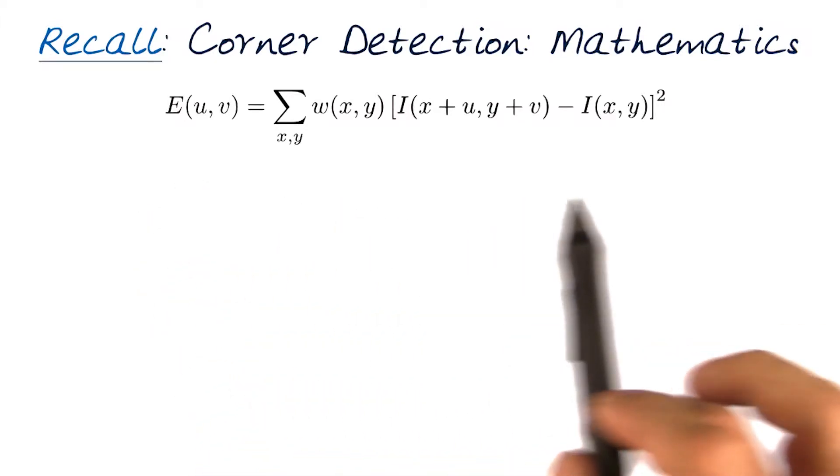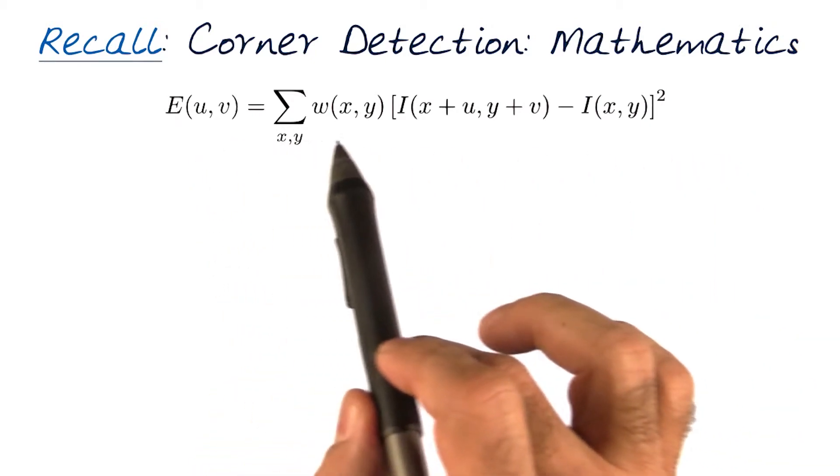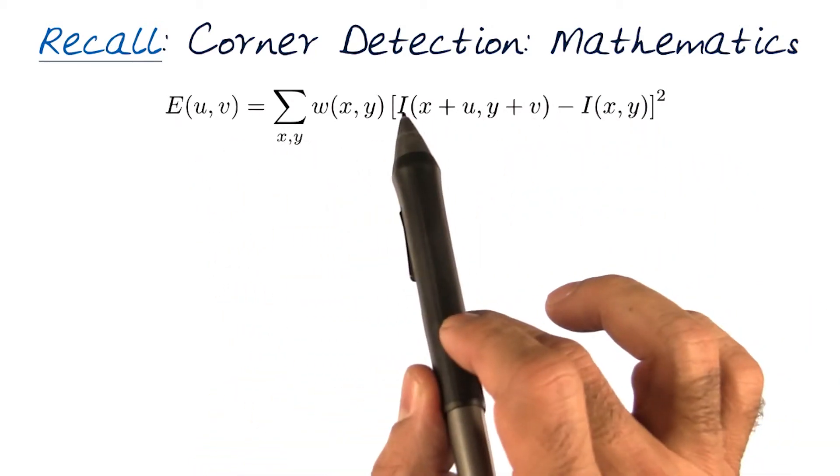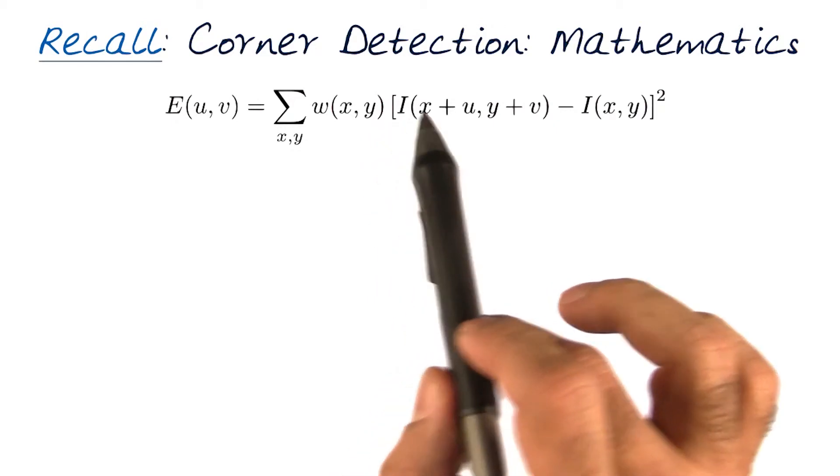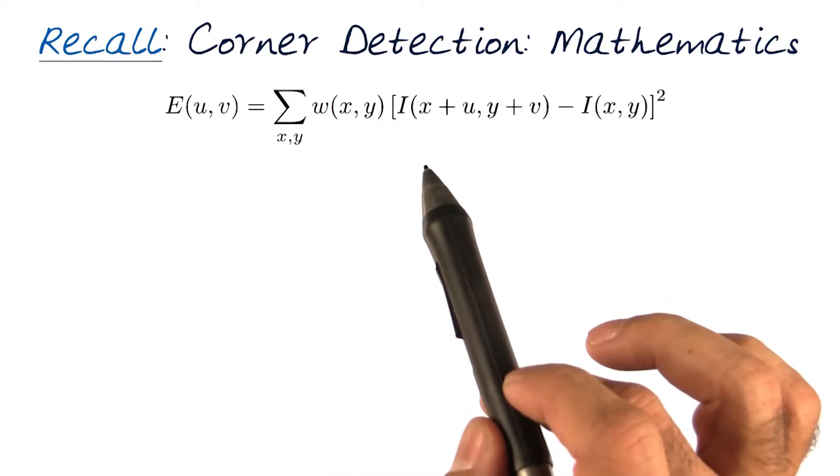We looked at this equation that gave us a way of analyzing an image by shifting it and using that shifting to find a corner.